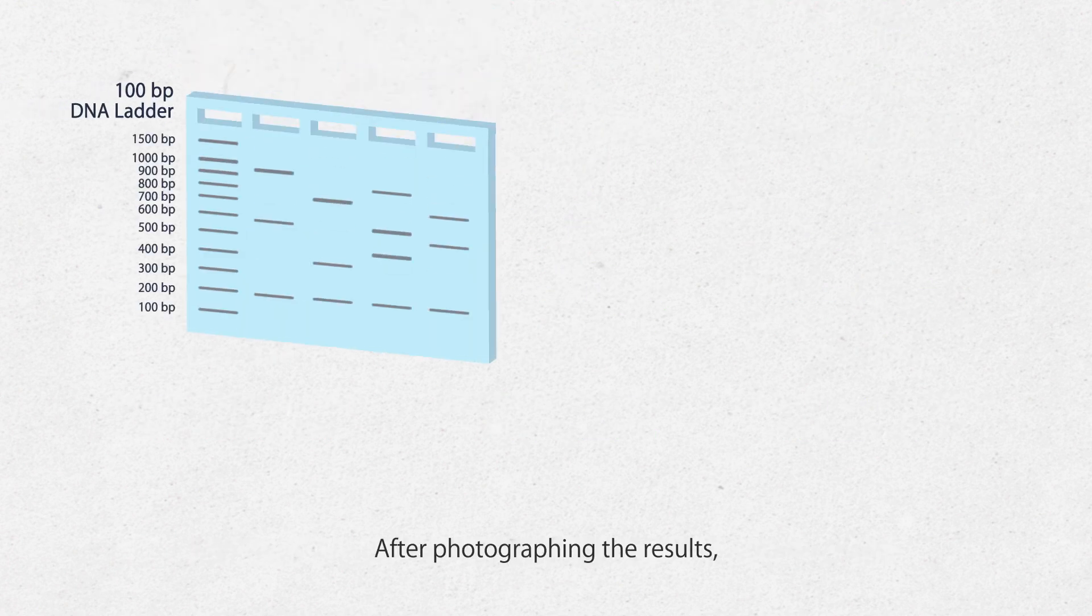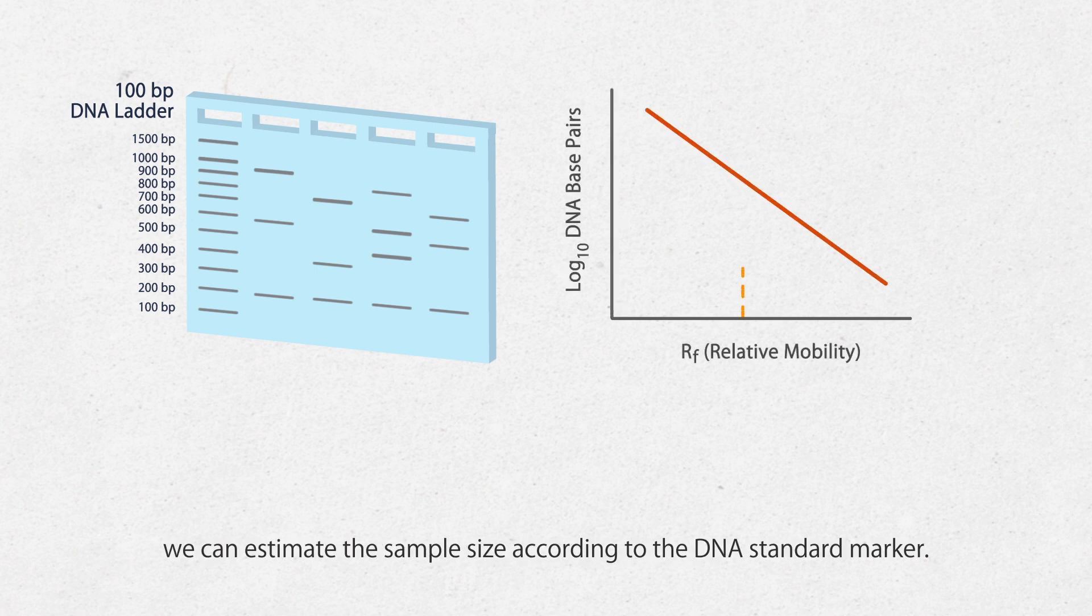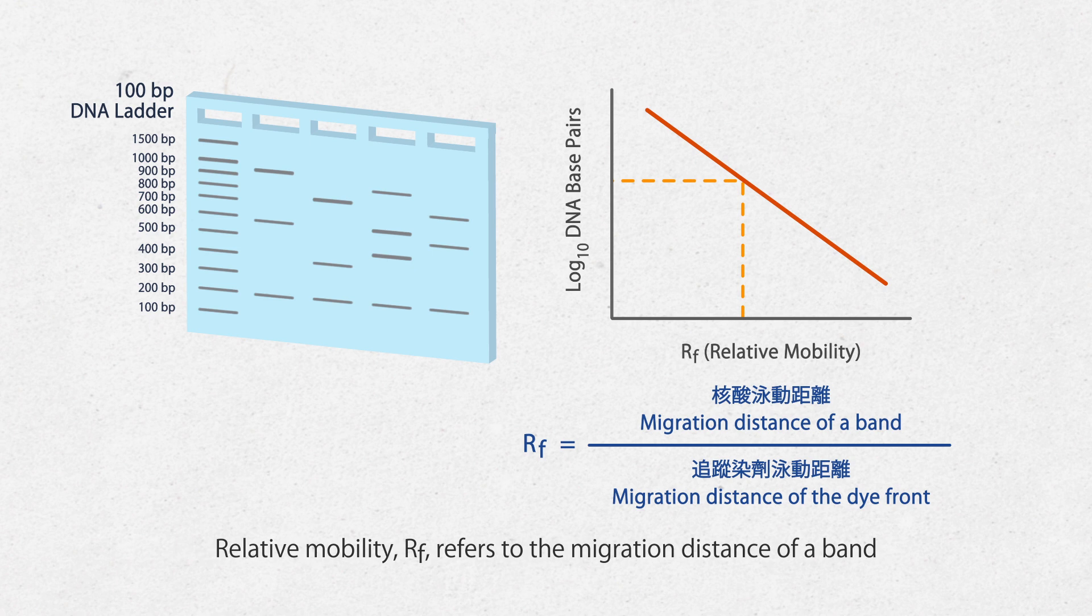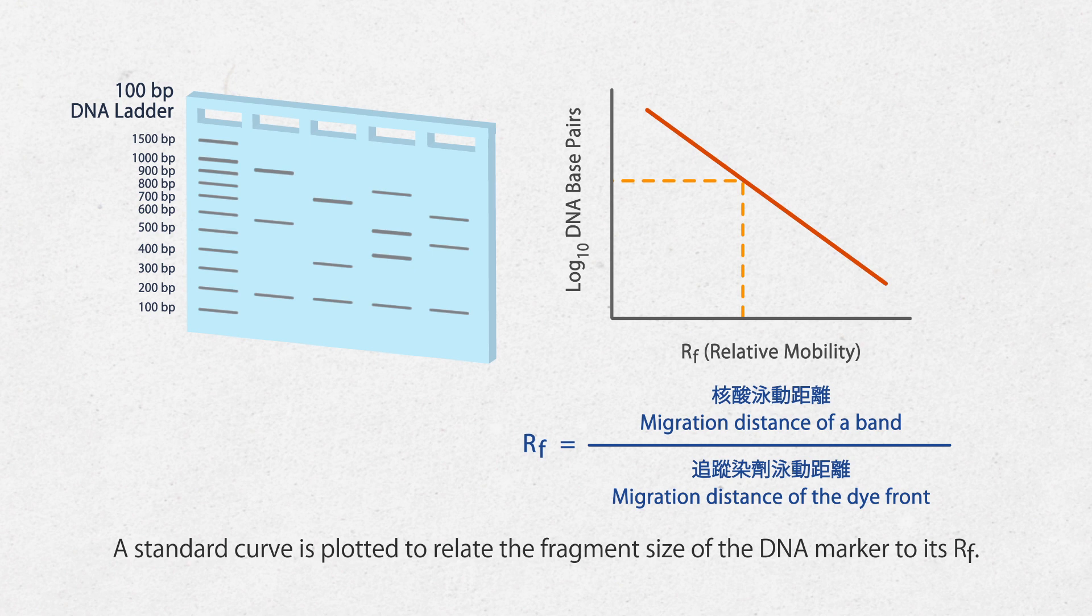After photographing the results, we can estimate the sample size according to the DNA standard marker. Relative mobility (Rf) refers to the migration distance of a band divided by the migration distance of the dye front. A standard curve is plotted to relate the fragment size of the DNA marker to its Rf.